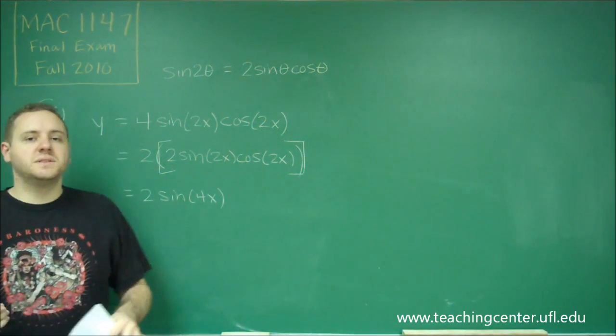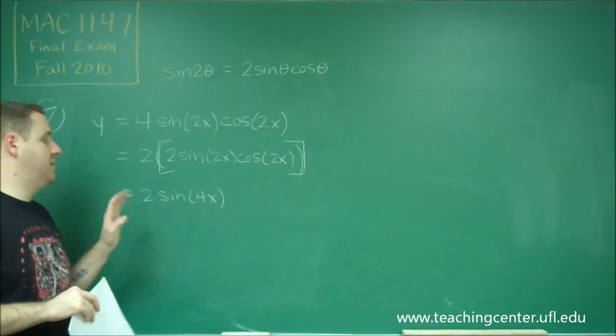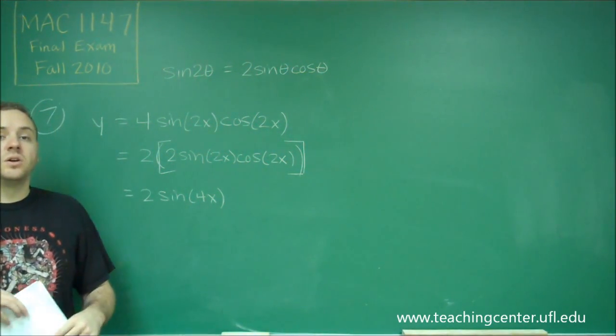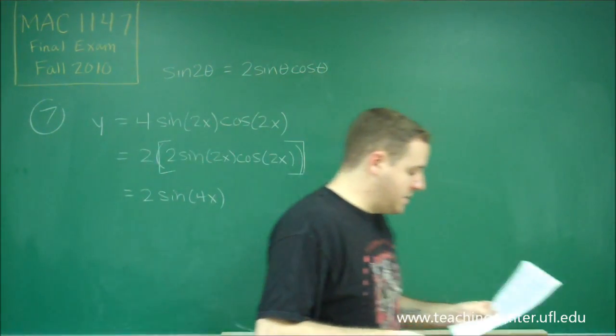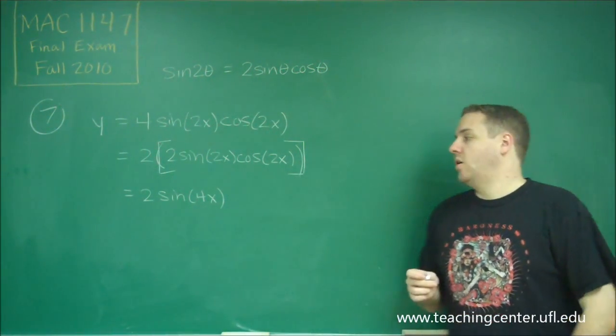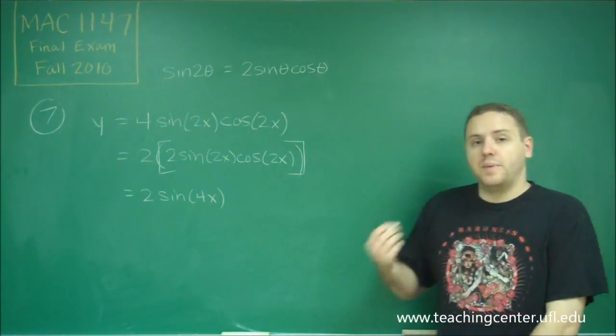So just using the double angle formula, we've simplified this down now just to one trig function, and now this should look pretty familiar. So remember that if you want to find the period of a trig function, you have to start with the base period.